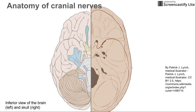This is a short video on the anatomy of the cranial nerves. Here is a view of the inferior side of the brain — the bottom of the brain. On the left of the image we see the brain itself, and on the right we see the skull that the brain would sit on. This is the inferior view where the 12 cranial nerves can be seen.